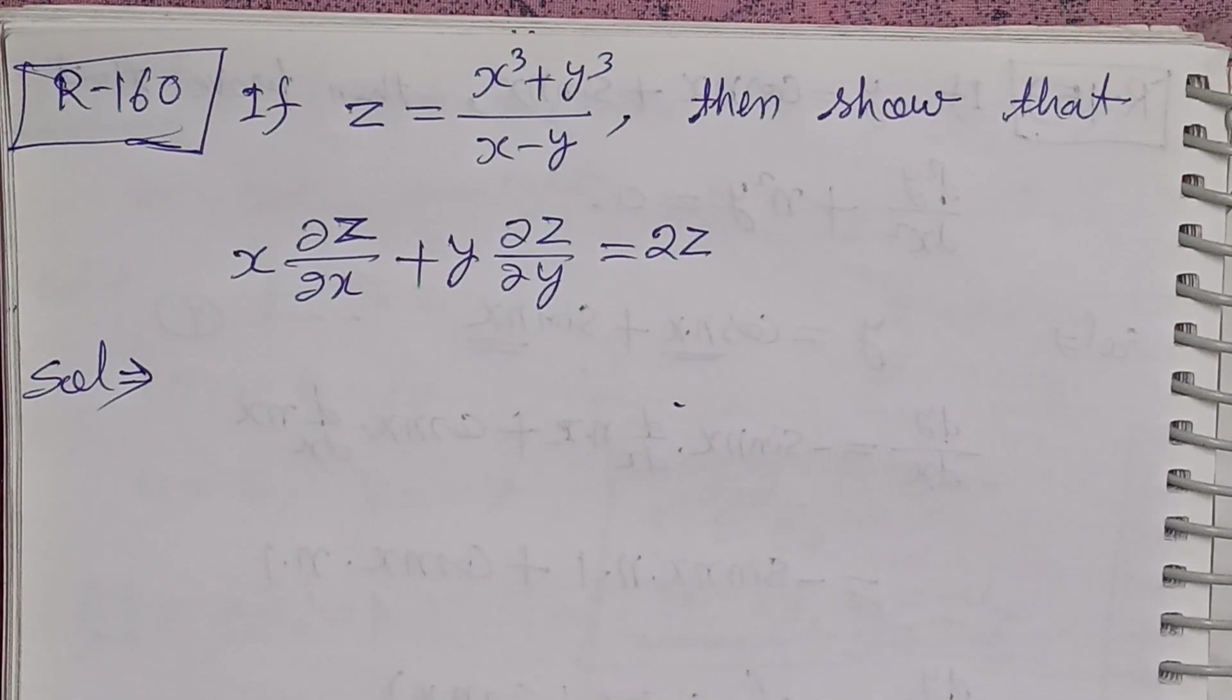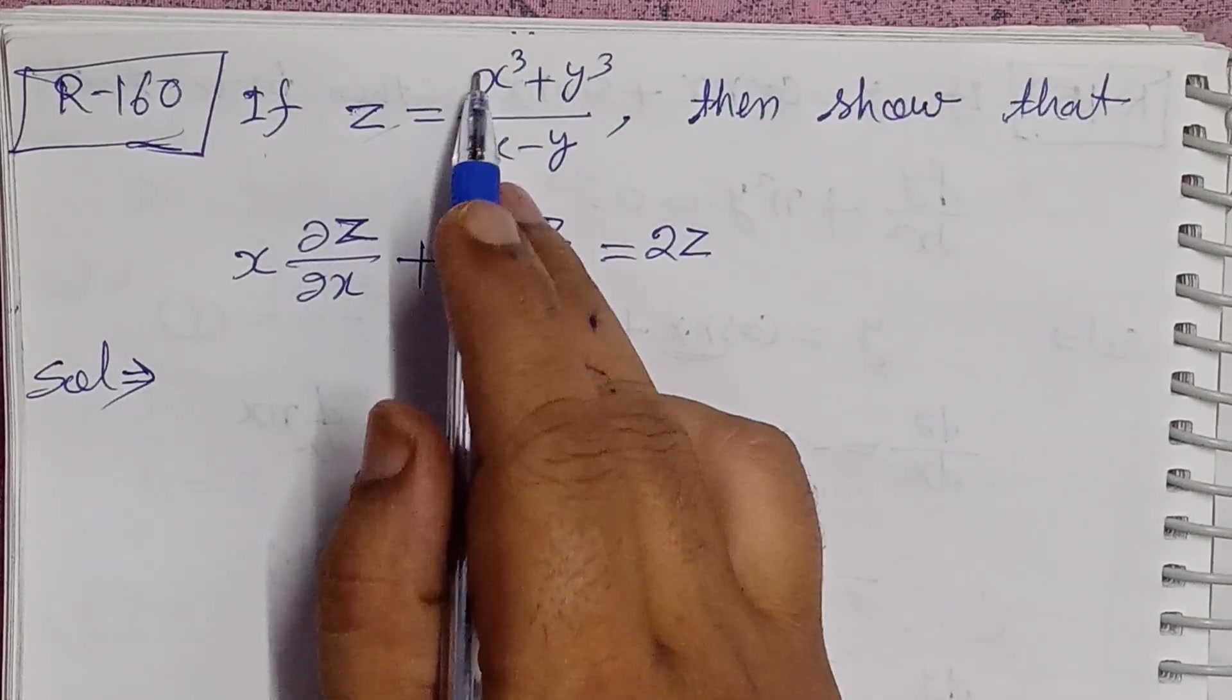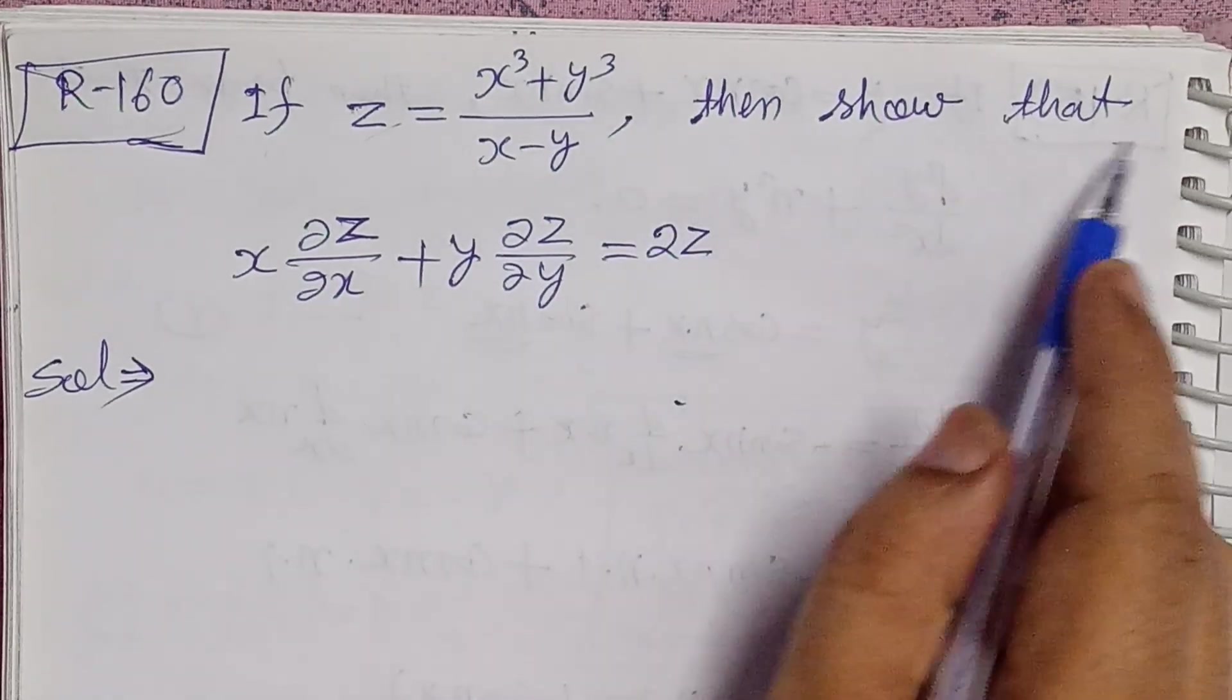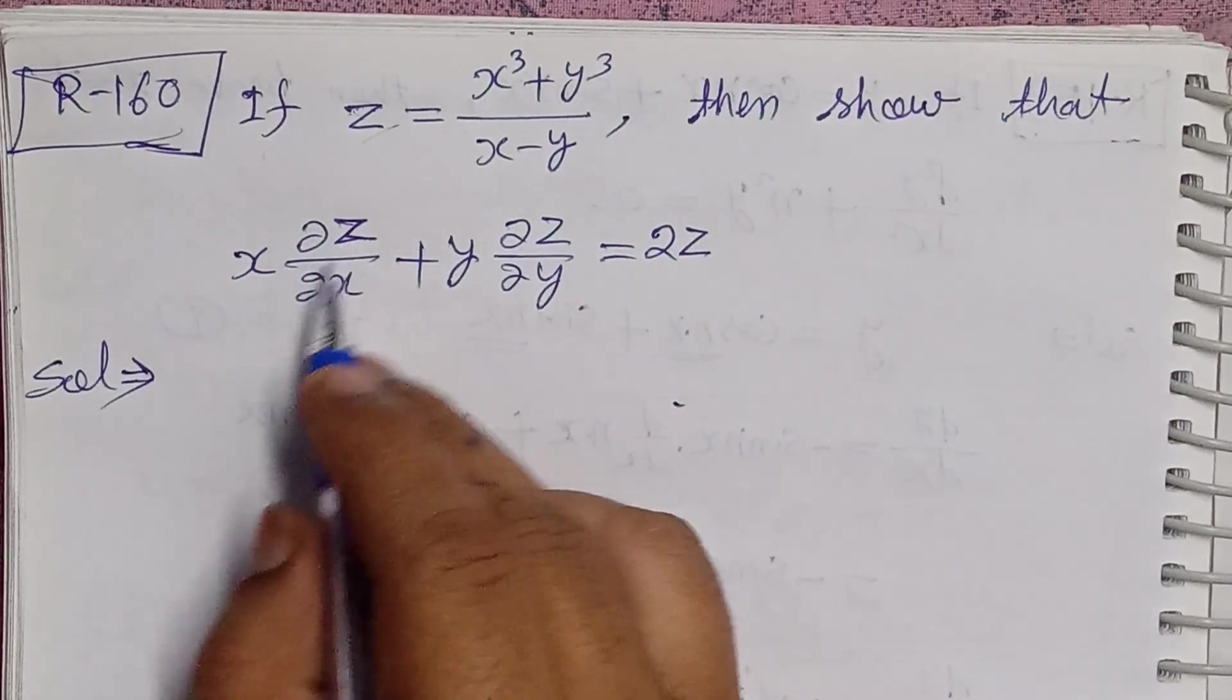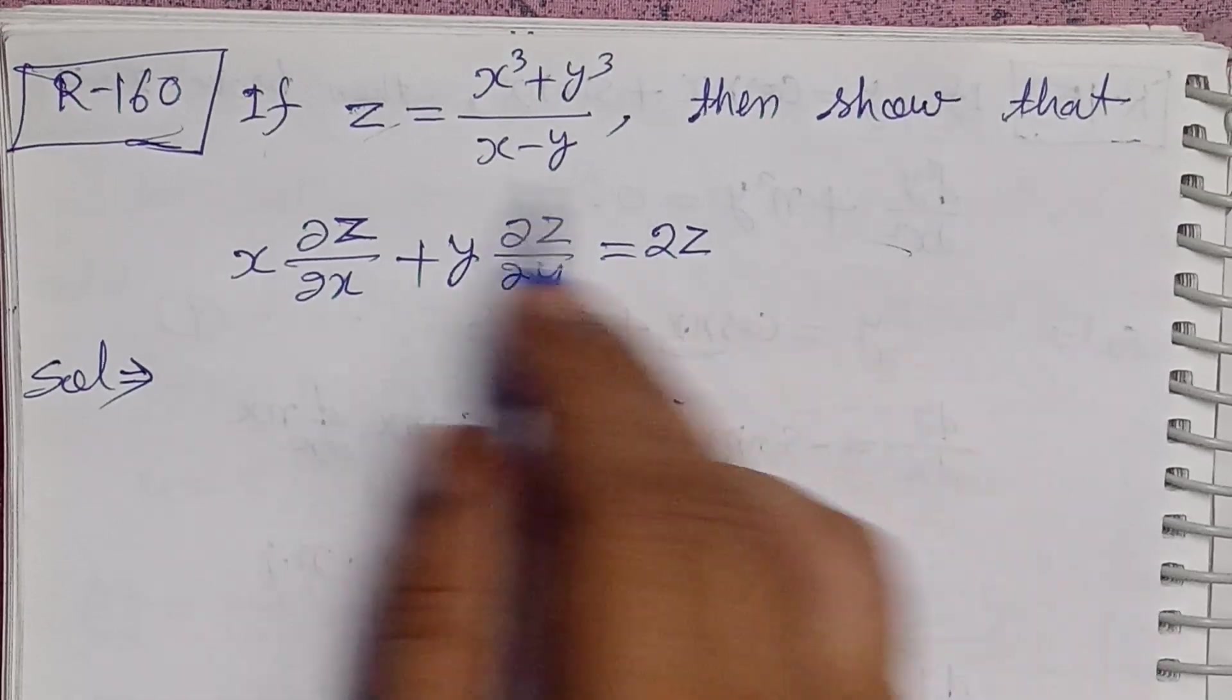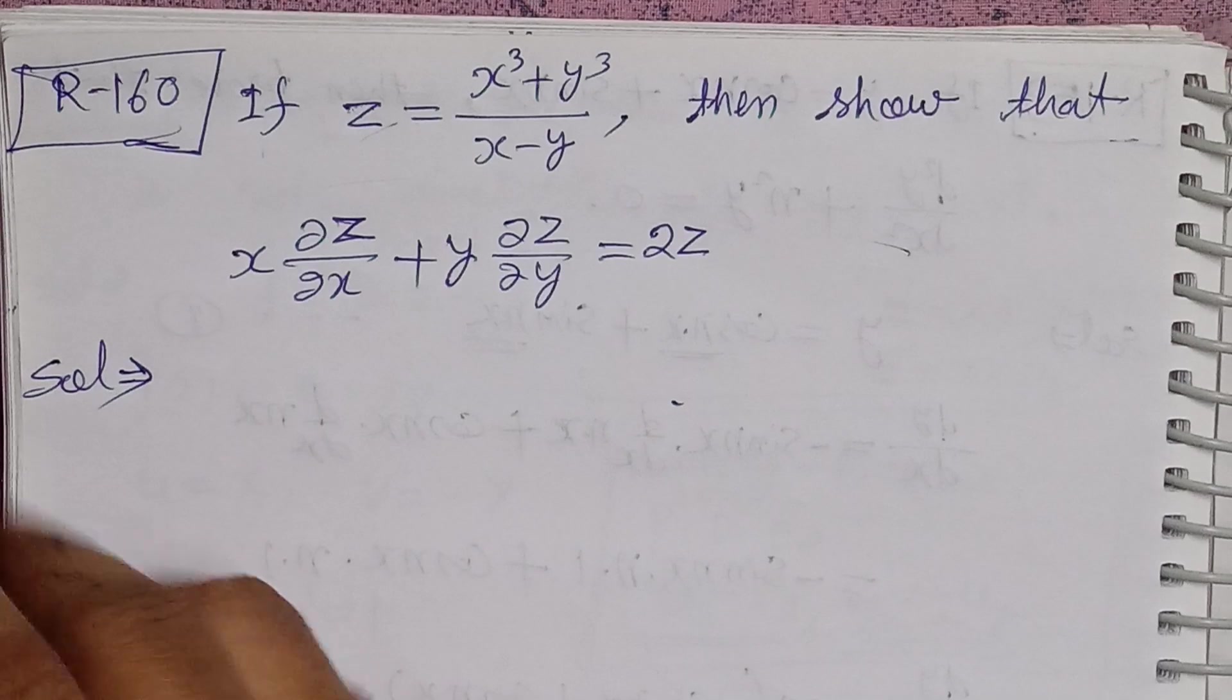Bismillahirrahmanirrahim. This problem is from differential calculus, partial differentiation chapter. If z is equal to x cubed plus y cubed upon x minus y, then show that x del z over del x plus y del z over del y is equal to 2z. We need to prove this.